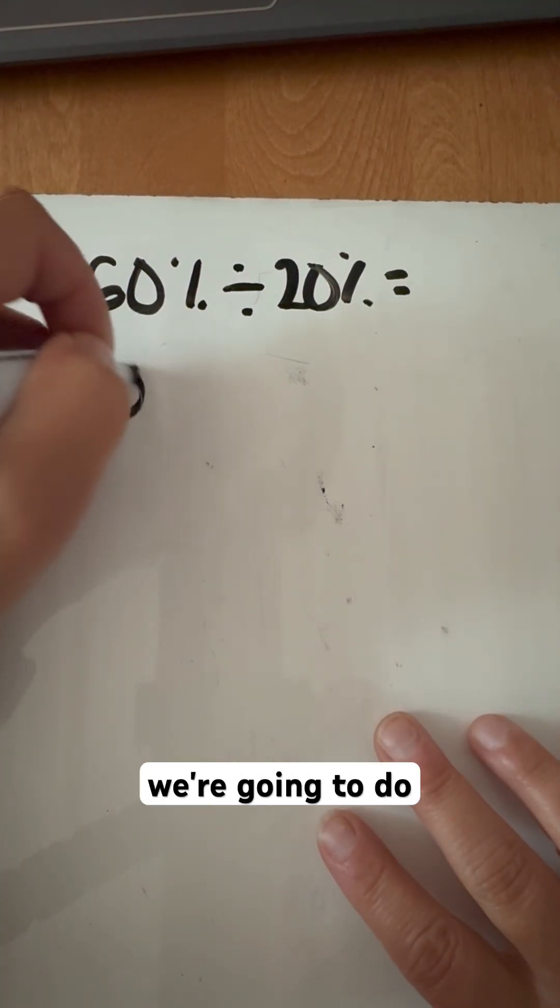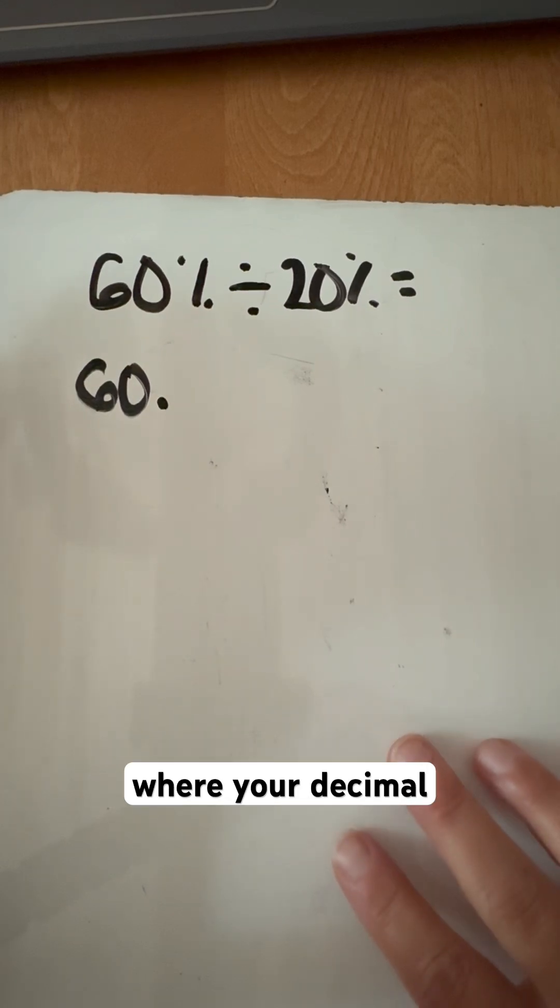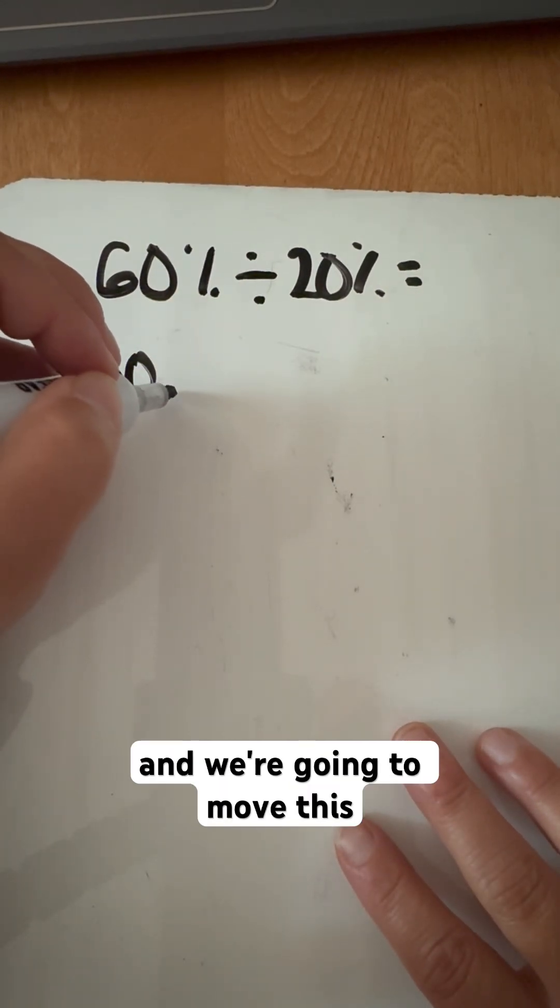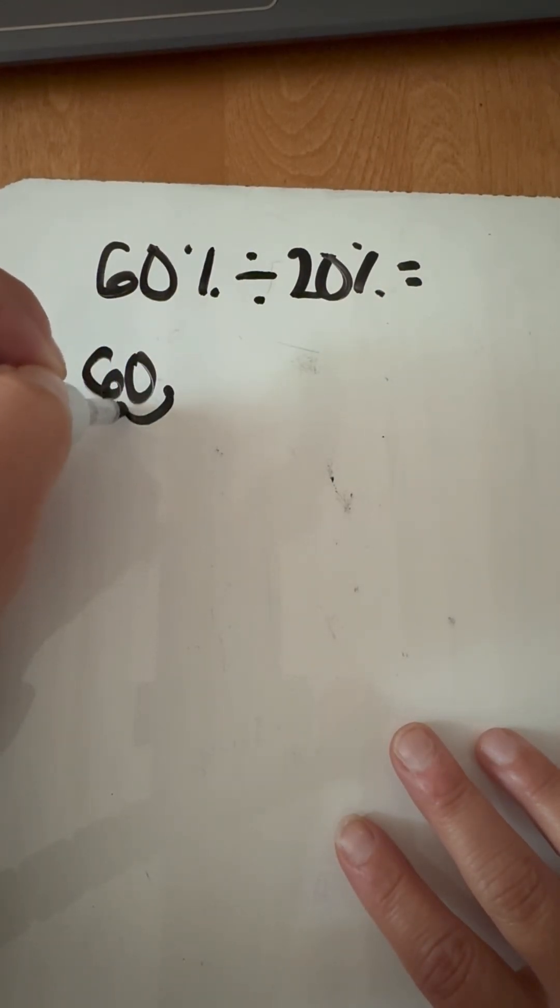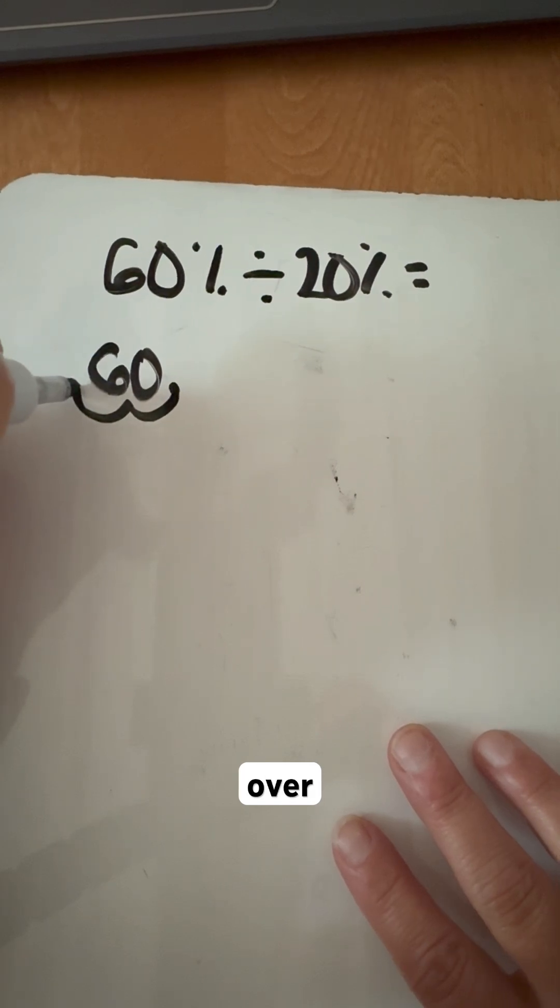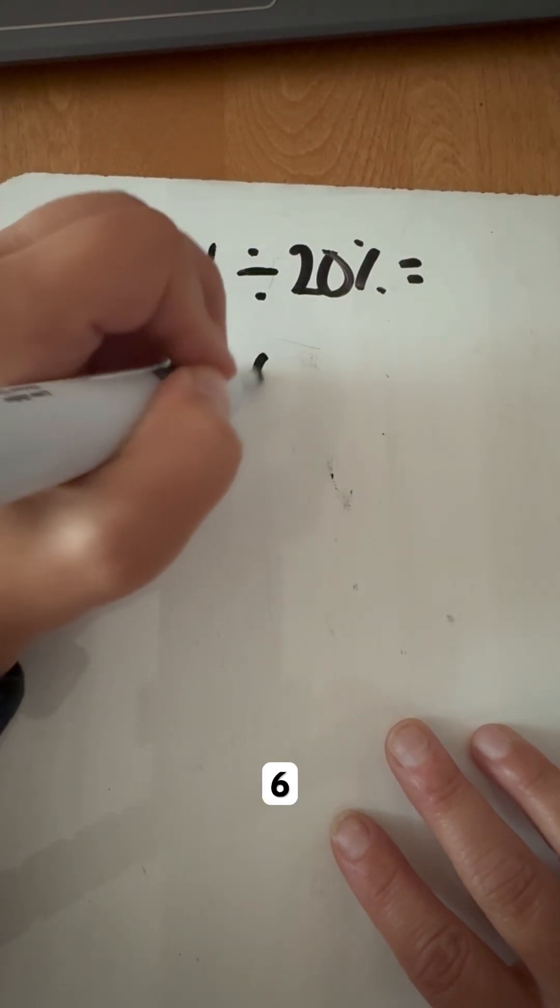So we're going to do 60 and we're going to put a dot at the end because that's where your decimal is going to be. And we're going to move this over as a decimal this way, two spots over to the left. That's going to give me 0.6.